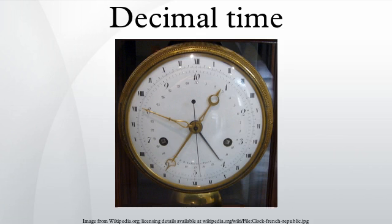Decimal time is the representation of the time of day using units which are decimally related. This term is often used specifically to refer to French revolutionary time, which divided the day into 10 decimal hours, each decimal hour into 100 decimal minutes, and each decimal minute into 100 decimal seconds.